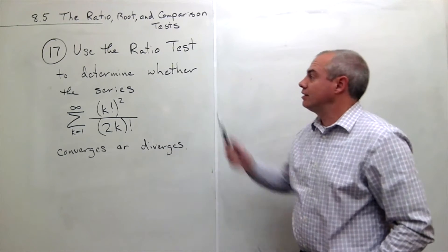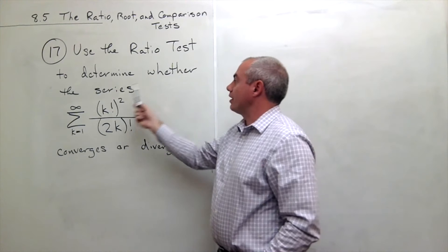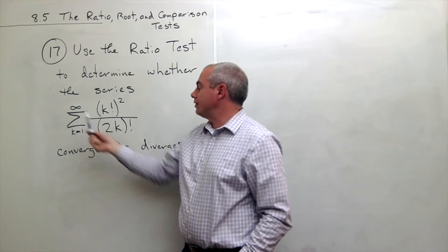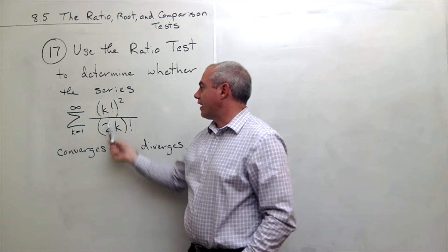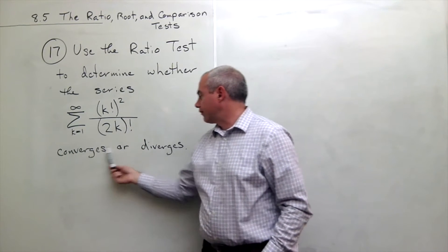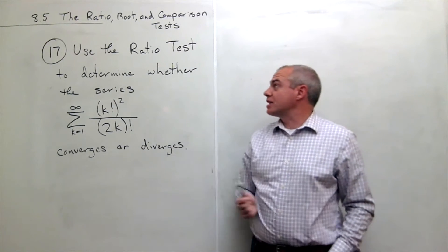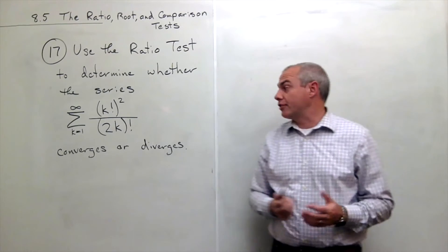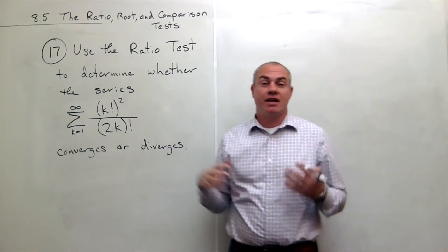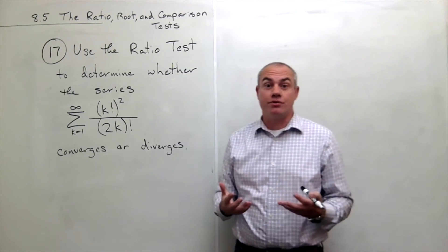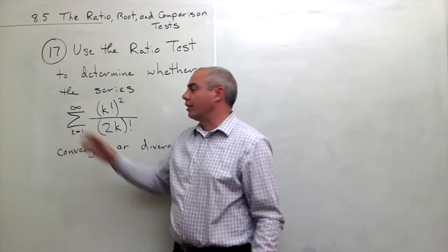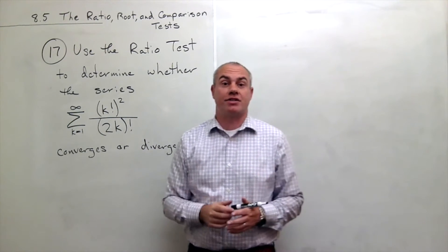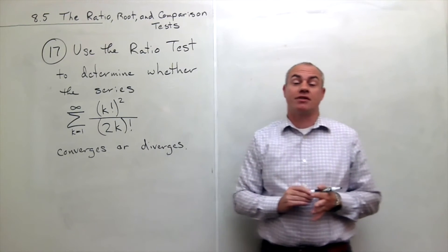I'm the calculus professor and today I'll be talking about the ratio, root, and comparison tests. In problem number seventeen, we'd like to use the ratio test to determine whether the series sum k going from one to infinity of k factorial squared divided by two k factorial converges or diverges. This problem tells us to use the ratio test, but in general, if you see factorials inside of a series, that should scream at you: please use the ratio test. So anytime I see factorials in a series and I want to know if it converges or diverges, the ratio test is the first place I go.